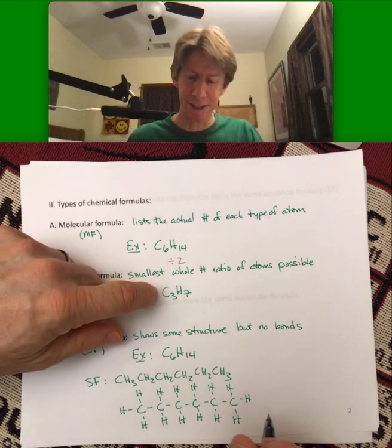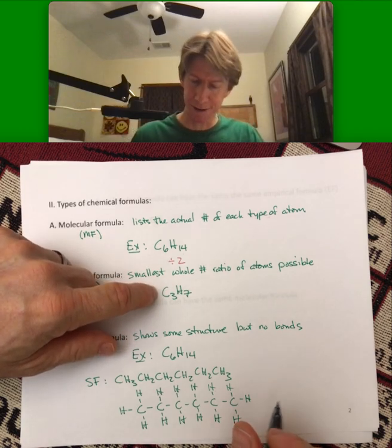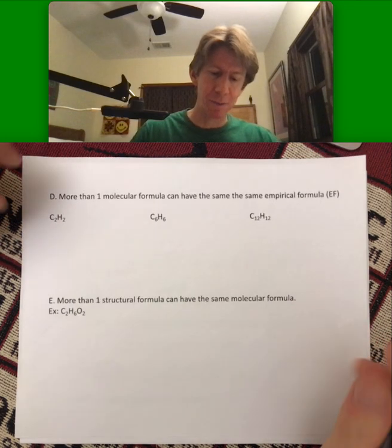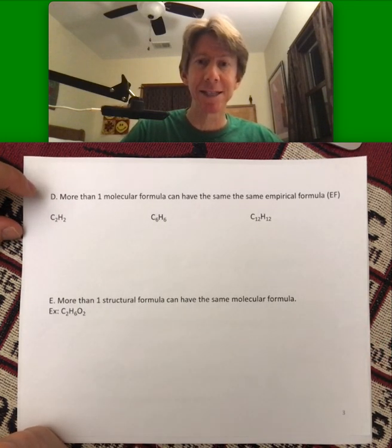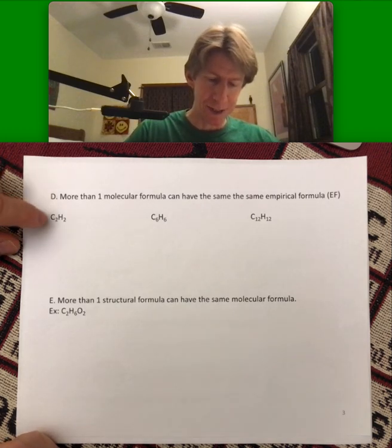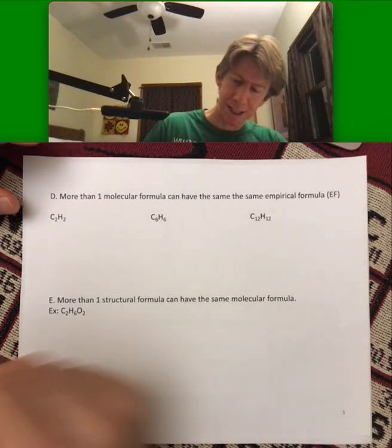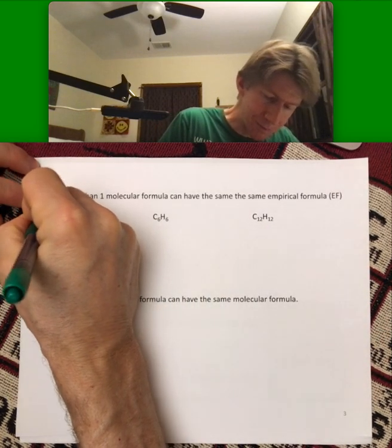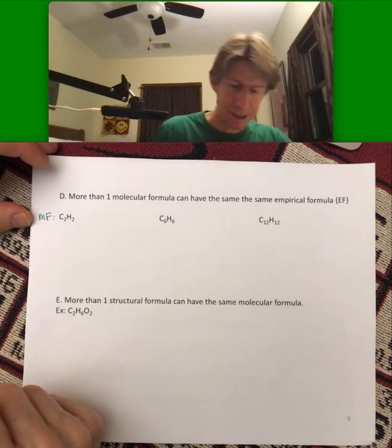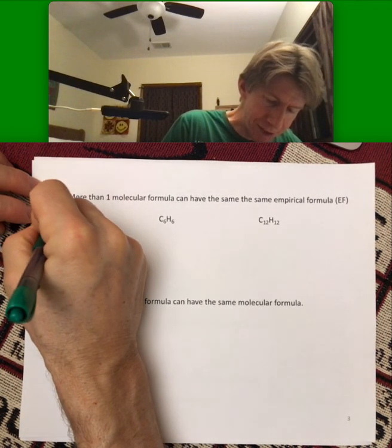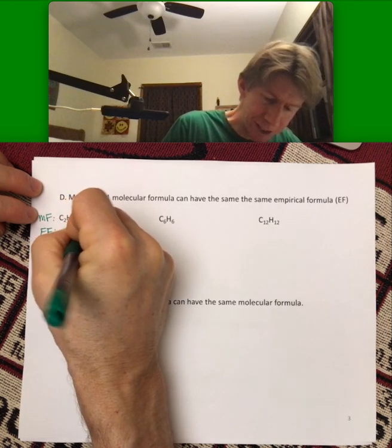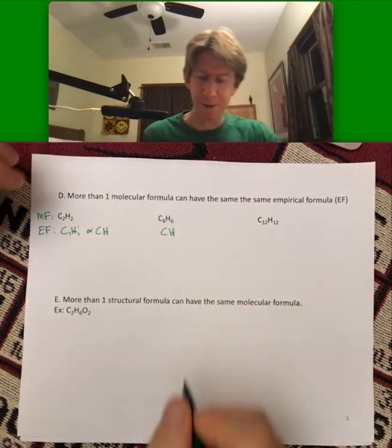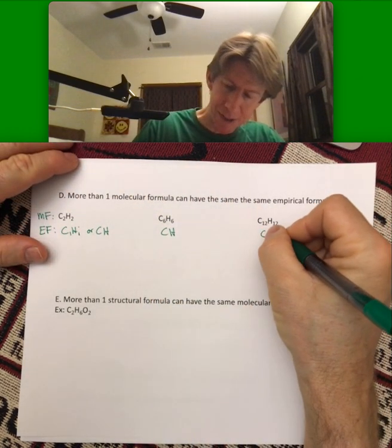As far as giving you information about the compounds, there is more than one molecular formula that can have the same empirical formula. So C2H2, C6H6, and C12H12, these are the molecular formulas. The empirical formula for each of these is just C1H1 or CH. We can divide both of these by six and also CH here.